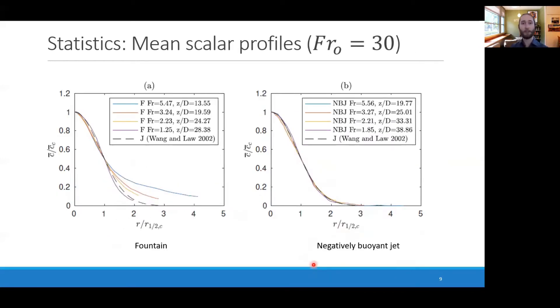Here are the scalar profiles or buoyancy profiles. Similarly to the last slide, we have, in the case of a negatively buoyant jet, we have Gaussian profiles over the full range investigated and very similar to a neutral jet. Whilst for the fountain, it's certainly not Gaussian. Again, a degree of similarity in the inner flow, but very much different shapes in the outer region.